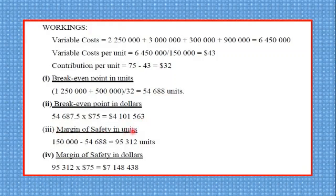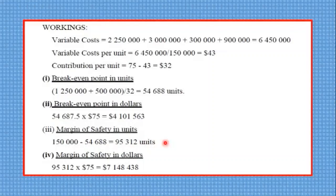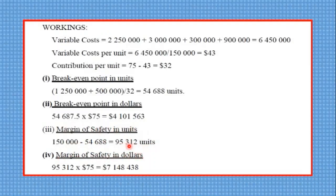The margin of safety in units, your 150,000 that you're producing and selling minus the breaking point in units. You get 95,312 units. Again, you don't need to get fancy. Use the formula there. It's a simple calculation. The margin of safety in dollars, you take the 95,312 and multiply it by $75, and you get this here.